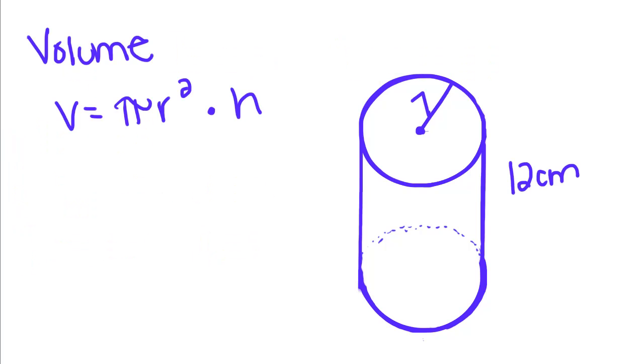Volume of a right circular cylinder is equal to πr² times height, which makes sense because if you think about it, the area of a circle is equal to 2πr²... excuse me, it's just equal to πr². And then if we multiply it by the height, it'll give us volume.